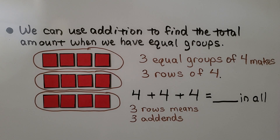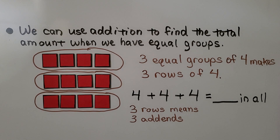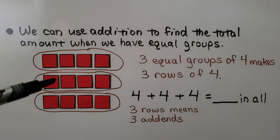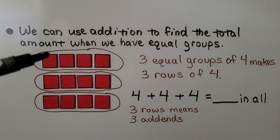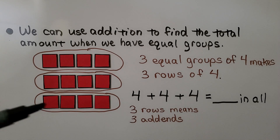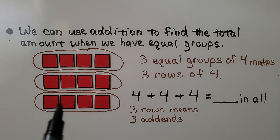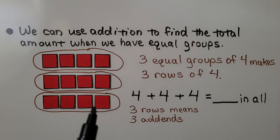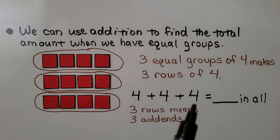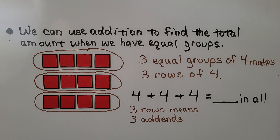So we can use addition to find the total amount when we have equal groups. We have 1 row, 2 rows, 3 rows — that's 3 groups. 3 equal groups of 4 makes 3 rows of 4. We're going to have 3 addends, and because there's 4 in each group, we're going to add 4 plus 4 plus 4. If you said 12, you're right.